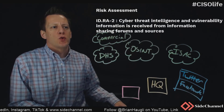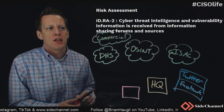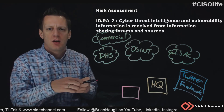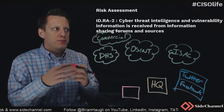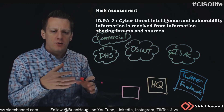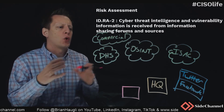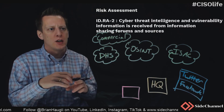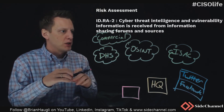The second risk assessment control: cyber threat intelligence and vulnerability information is received from information sharing forums and sources. This is a slightly more mature control that smaller organizations aren't going to be able to fully adopt, but larger organizations definitely should and can — and really should be doing this.